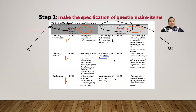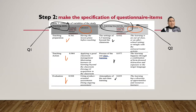Step two is making the specifications of questionnaire items — the so-called 'kisi-kisi soal.' You make a table like this. This specification is applicable for any instrument, whether a test, questionnaire, or interview guide.